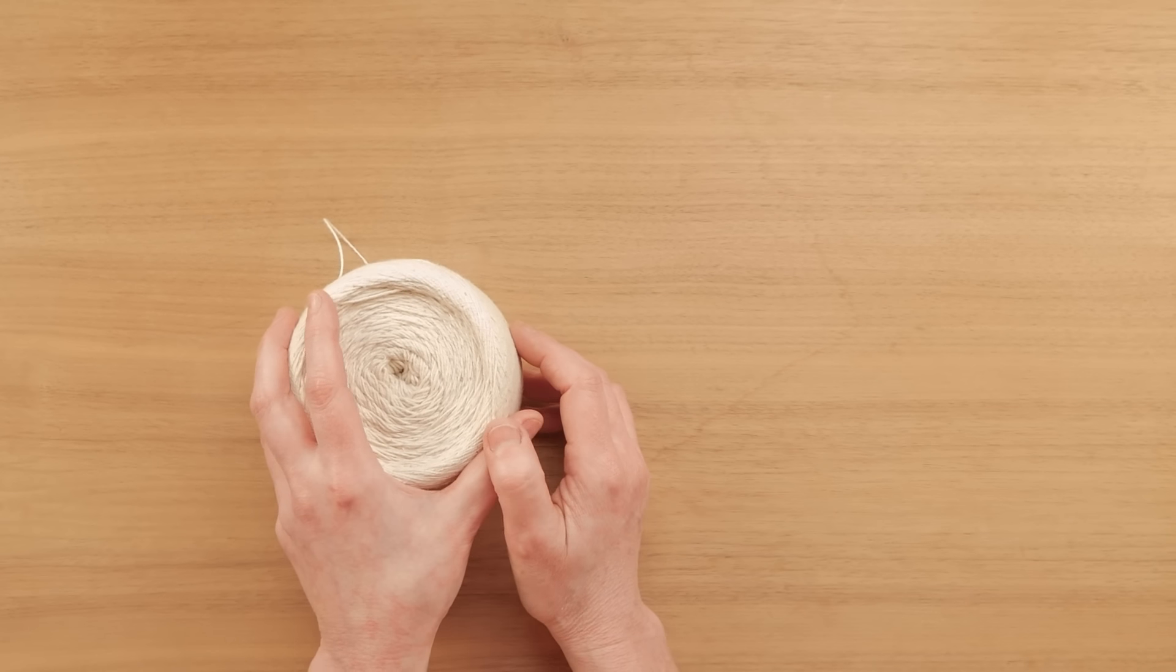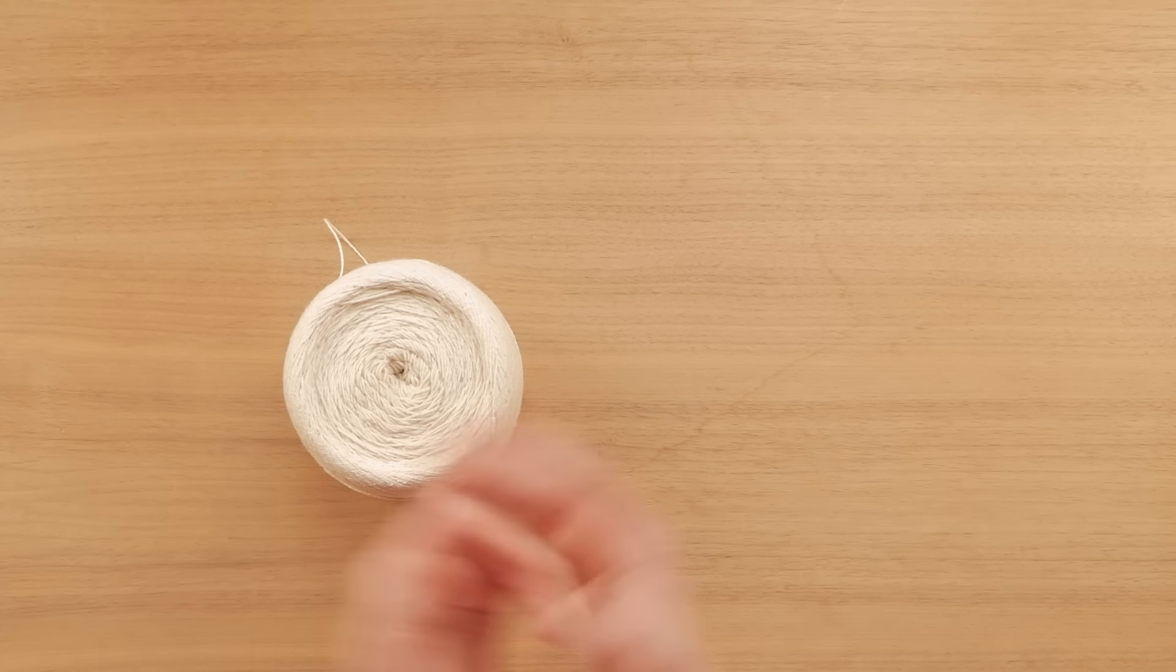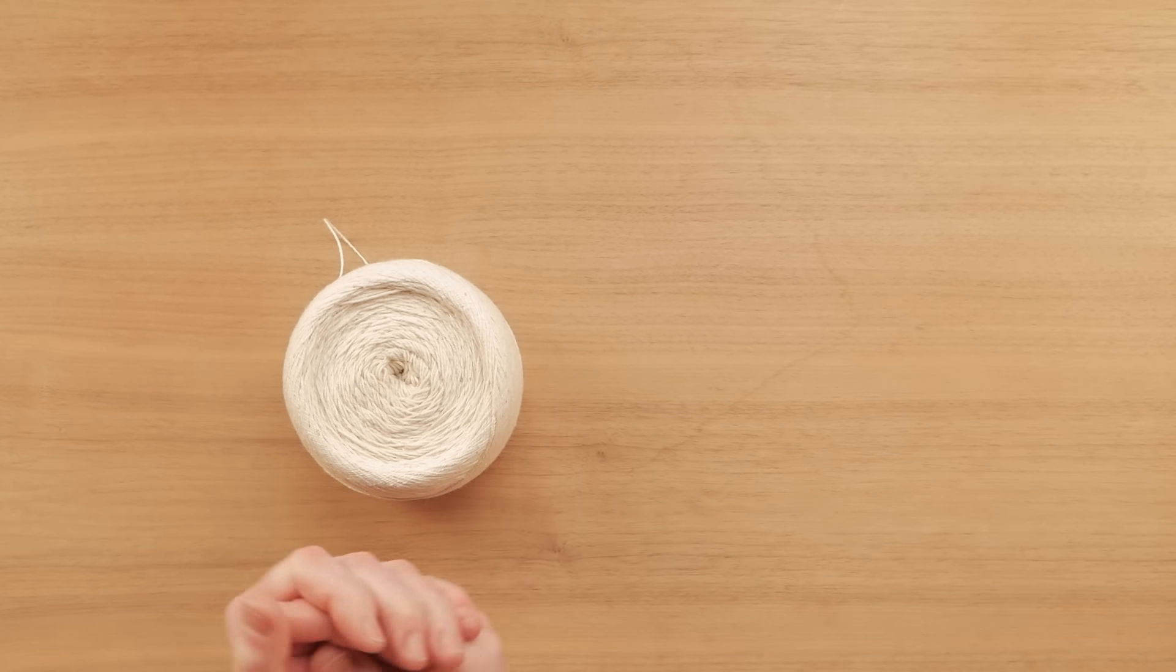I do suggest waxed linen but there are other alternatives, especially if you can't get waxed linen. Sometimes it can be really pricey because you can only find it in bookbinding suppliers' websites and that kind of thing. Alternatively, you can use something like upholstery thread. It is thin but it is very strong.